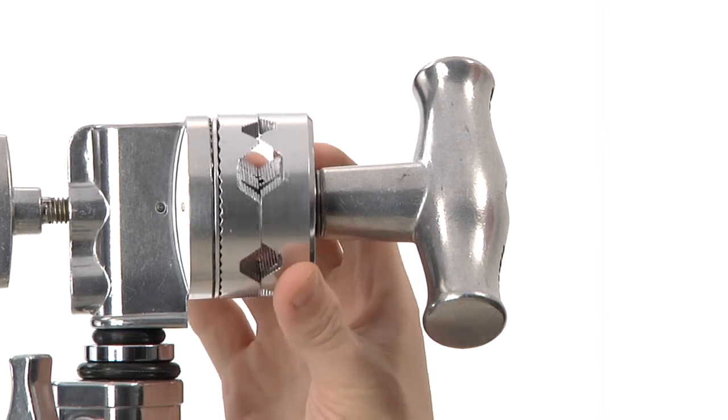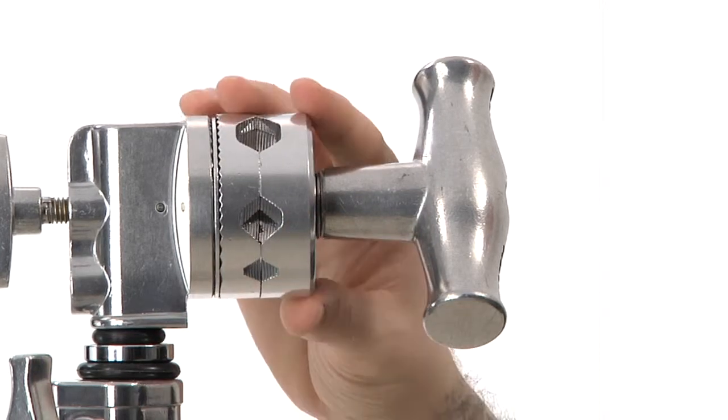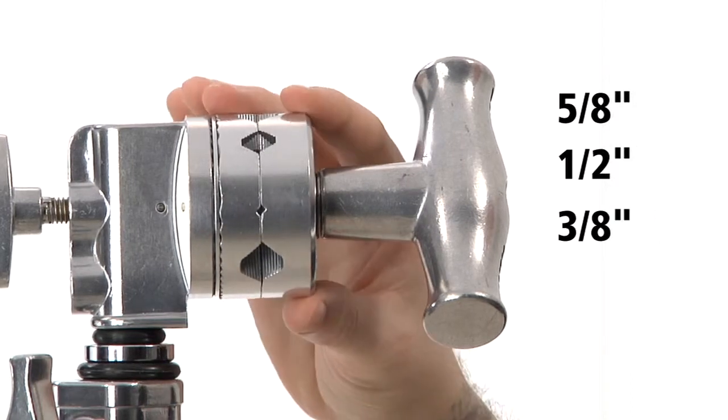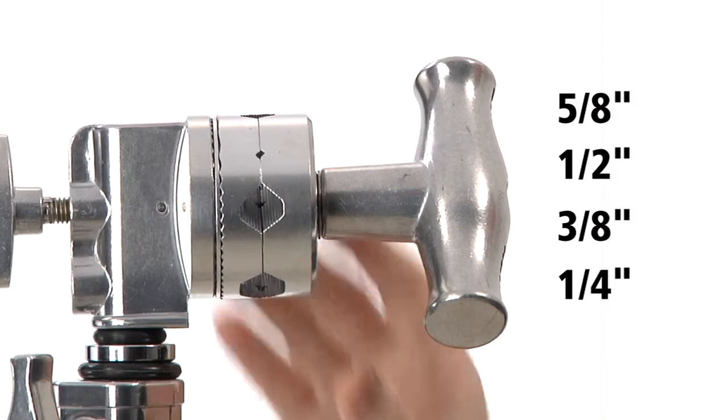The discs have four different sized v-shaped jaws to accept any accessory with a 5 eighth inch, half inch, 3 eighth inch, quarter inch mounting stud or tubing.